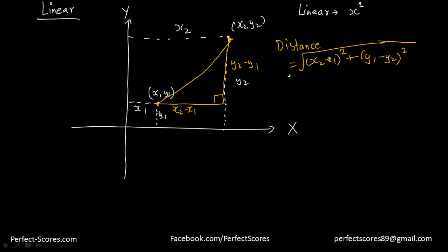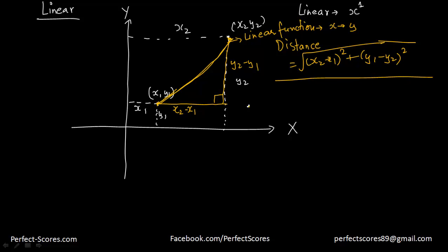So the distance between two points is equal to the square root of (x2 minus x1) whole square plus (y2 minus y1) whole square. Now this line that I have just joined is a linear function. Why do I call this a linear function? Because for each value of x there is a single value of y, and for a single value of y there is a single value of x — a one-to-one relationship. Now one thing you can define in a linear function is the slope.